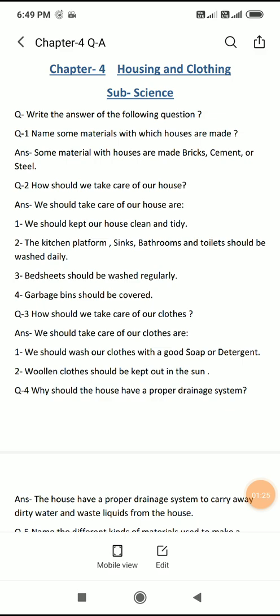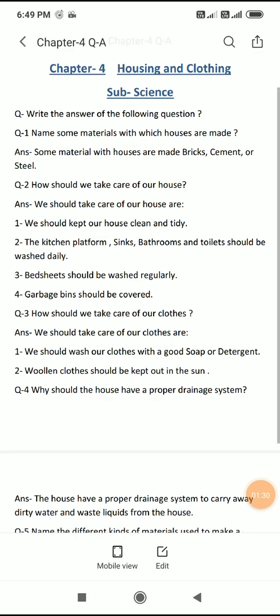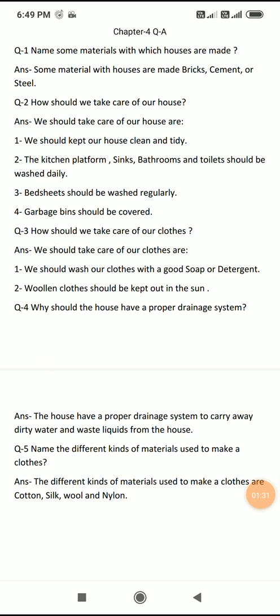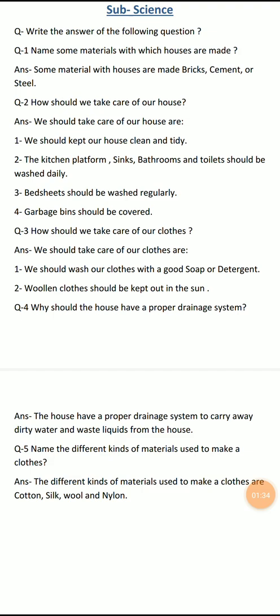Woolen clothes should be kept out in the sun. Woolen, joh garm kapde hote hain, unhain dhoop mein rakhna chahiye. The fourth question is: why should the house have a proper drainage system? Ghar se paani nikalne ka proper system kyun hona chahiye? The house should have a proper drainage system to carry away dirty water and waste liquid from the house.